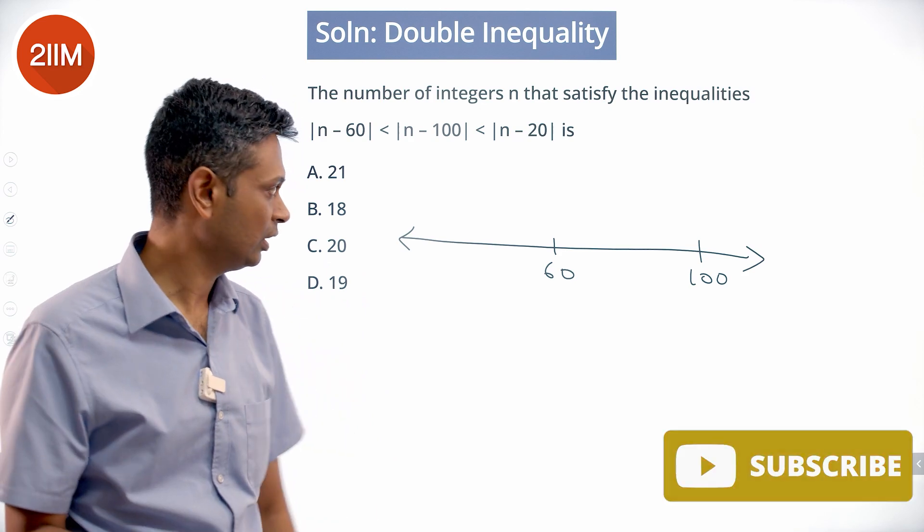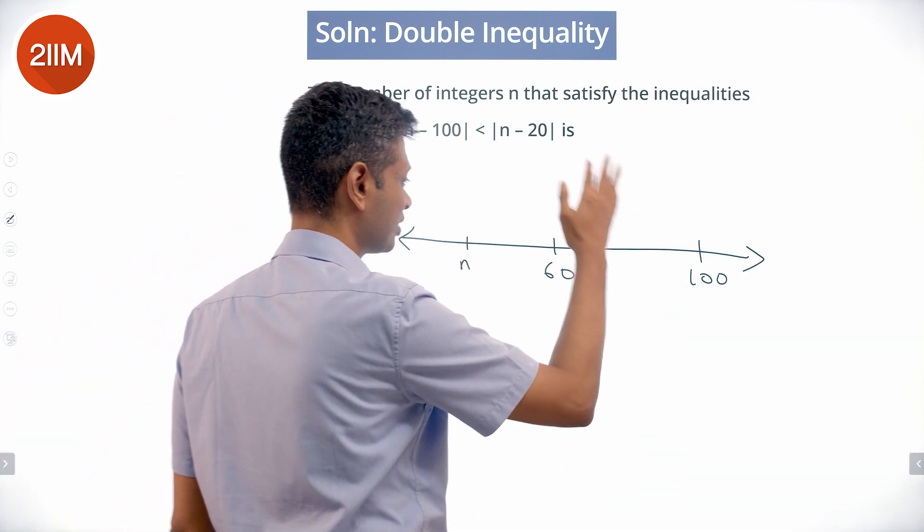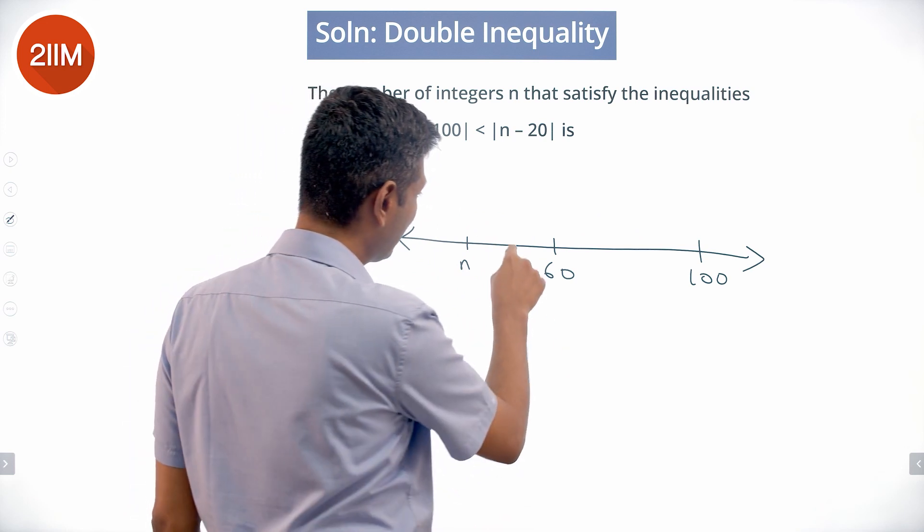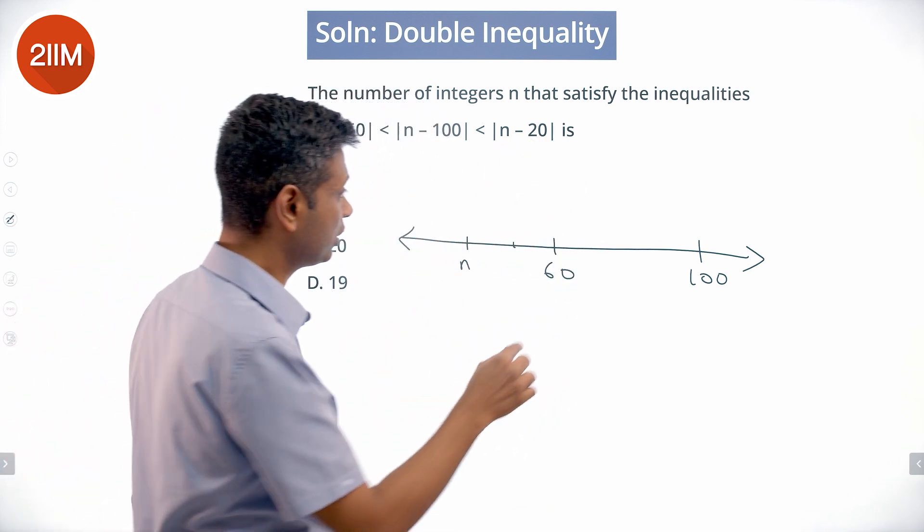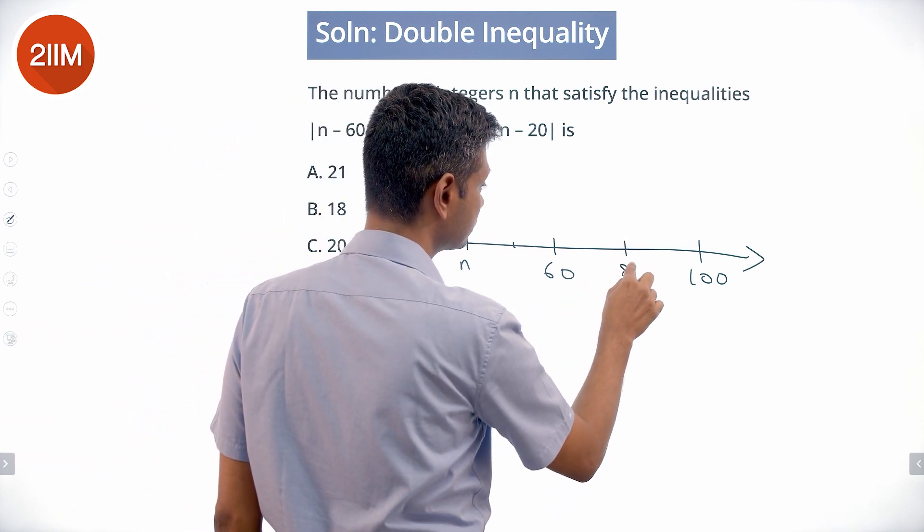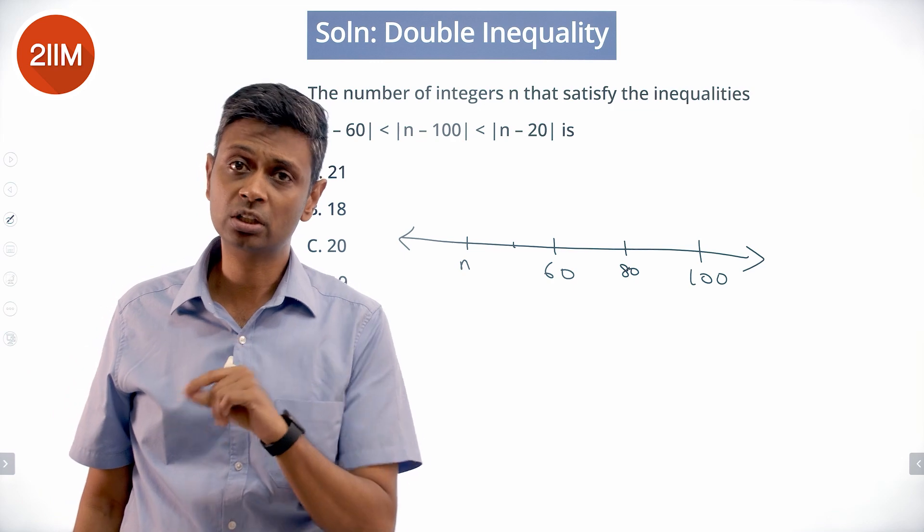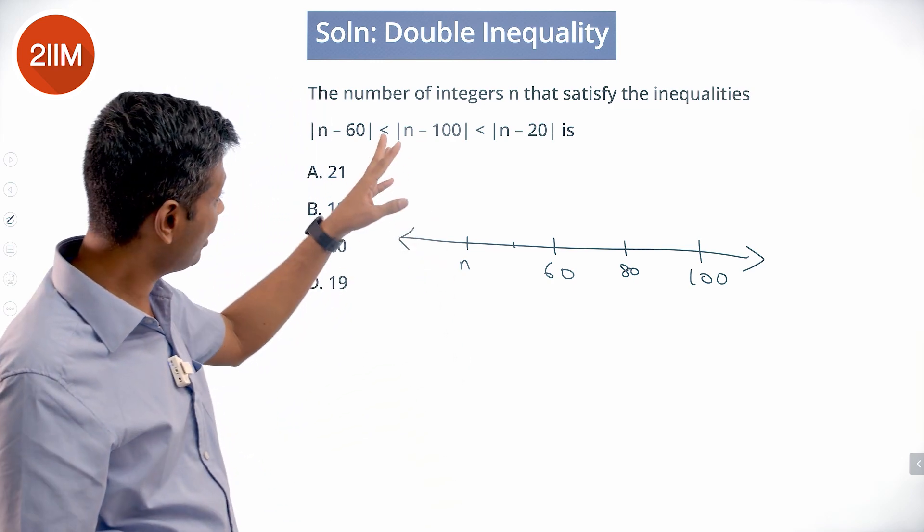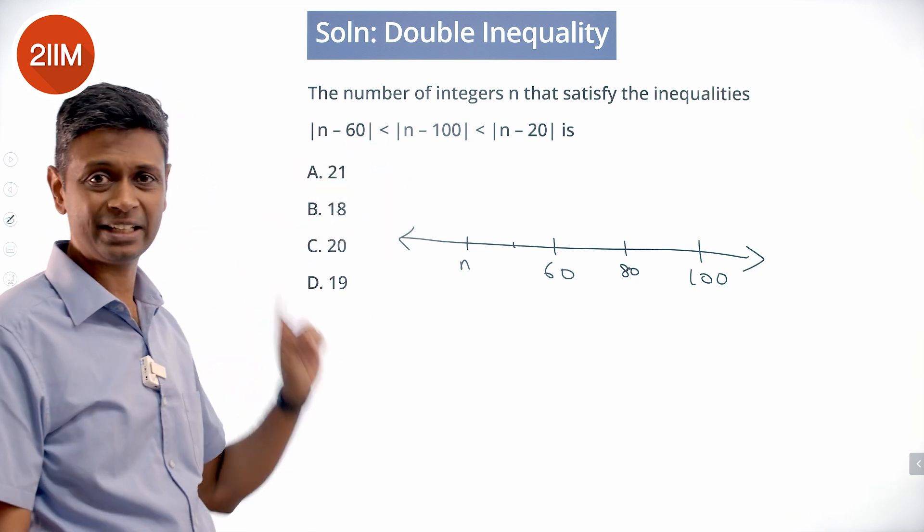Think about this: if n were here, distance from 60 would be less than distance from 100. If n were here, here, here, throughout it will work. There will be a turning point. The turning point will be at 80. |80 - 60| equals |80 - 100|. So where will it hold good? It will hold good when n is less than 80.